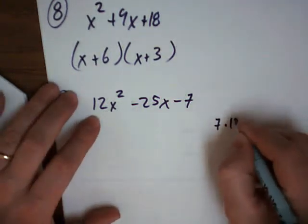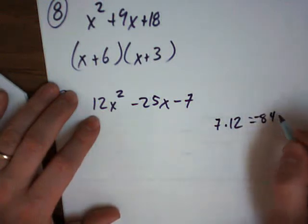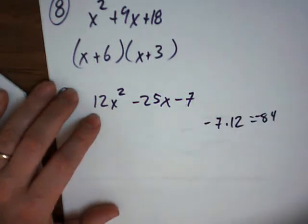So you'd say 7 times 12, that'd be 84? Negative 84, right? Is that right? 7 times 12?